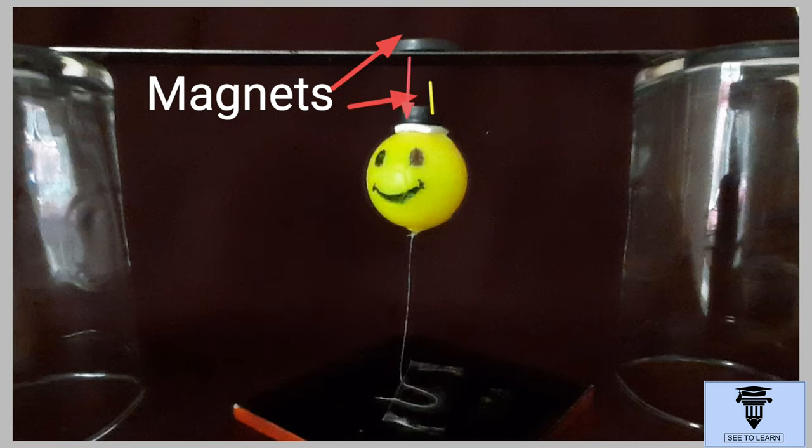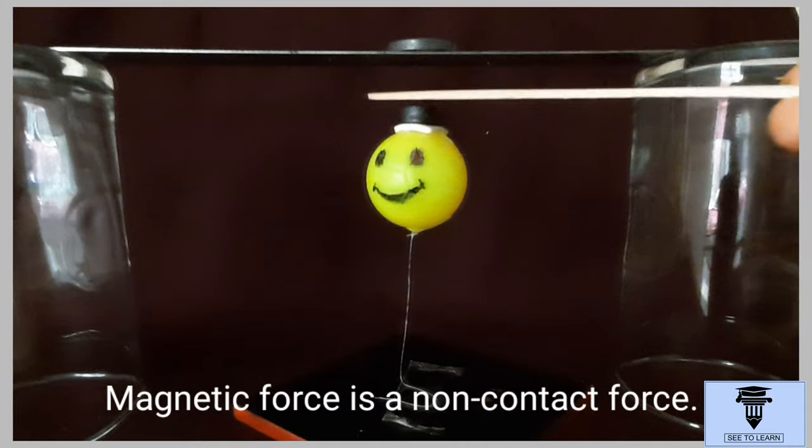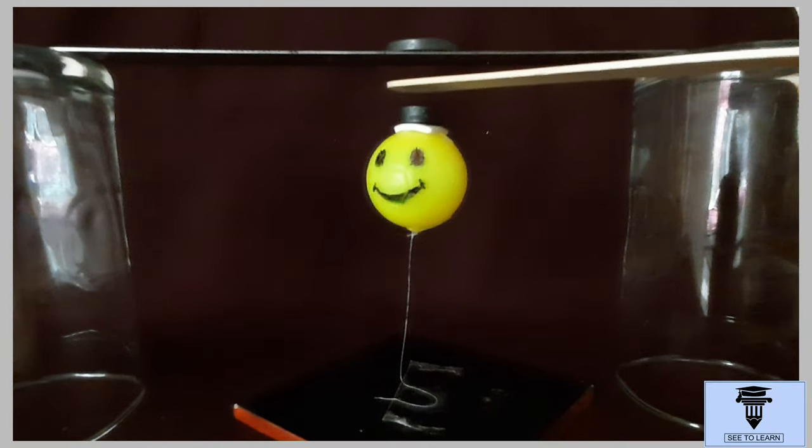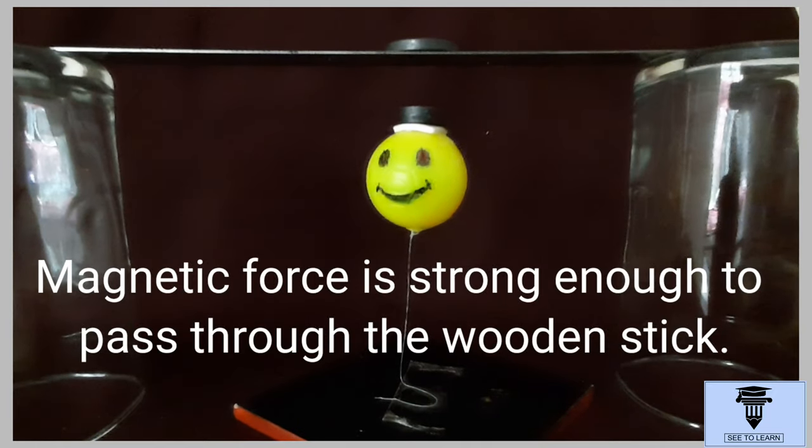The two magnets exert a force called magnetic force on each other. The magnetic force can act from a distance. It's a non-contact force. Can you see the gap between the two magnets? Now, the ball does not fall even when I move a wooden stick between the magnets. It means the magnetic force is strong enough to pass through the wooden stick.